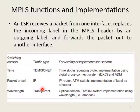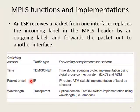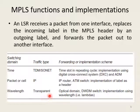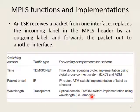Another MPLS implementation is based on internet protocol or ATM (asynchronous transfer mode), where a label is used as a header to move packets from one point to another. The third implementation is WDM or wavelength division multiplexing — a transparent optical domain approach where switching is implemented based on wavelength (lambda) using DWDM switch networks. These are the basic functionalities used with MPLS.